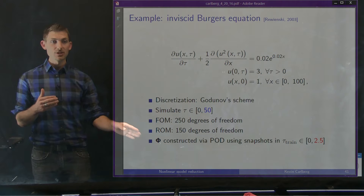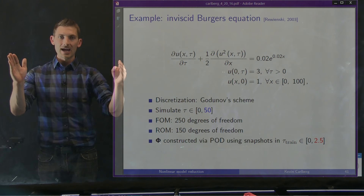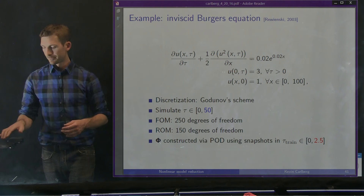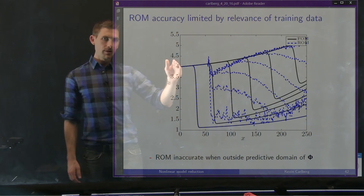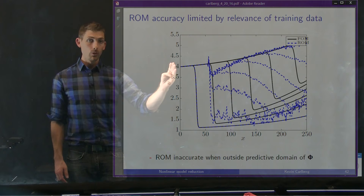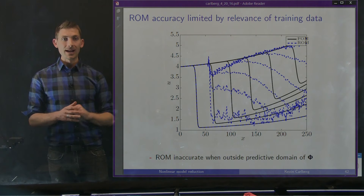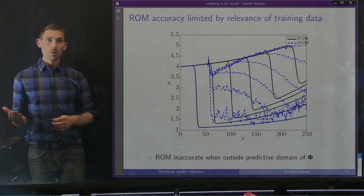I'm going to train my ROM by collecting snapshots only for the first two and a half seconds of the shock moving, then try to predict with the ROM for the entire time interval. The ROM won't be reduced all that much — going from 250 to 150 degrees of freedom — yet the reduced order model fails miserably. The ROM works well for the first two and a half seconds, but because it knows nothing about shock positions past that point, it completely blows up. The ROM is inaccurate when it's outside the predictive domain of phi — we've violated our subspace assumption.